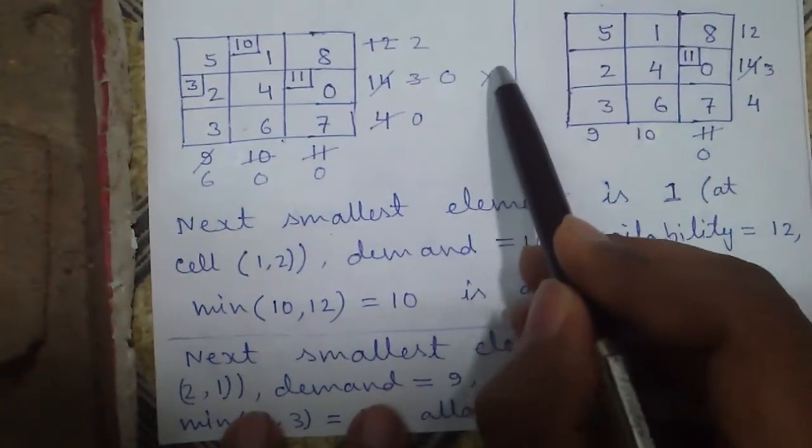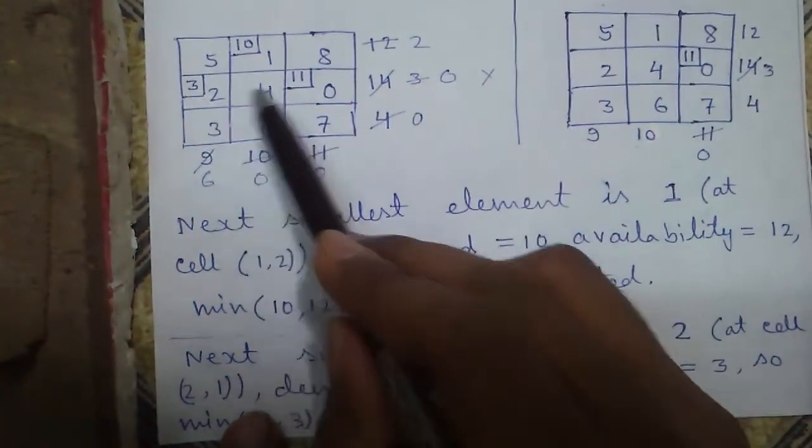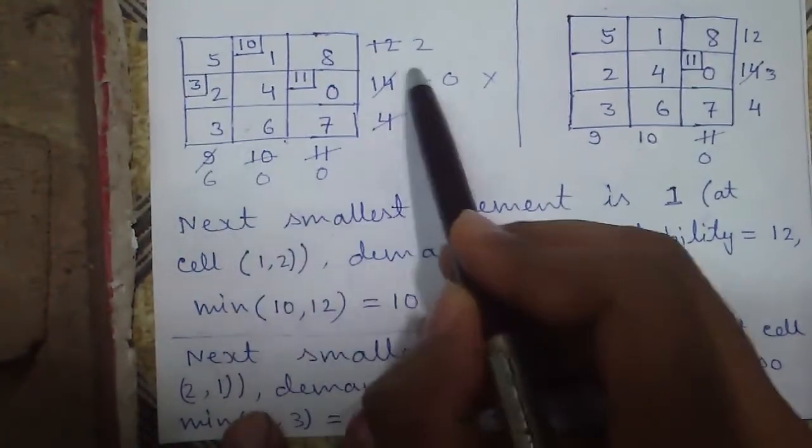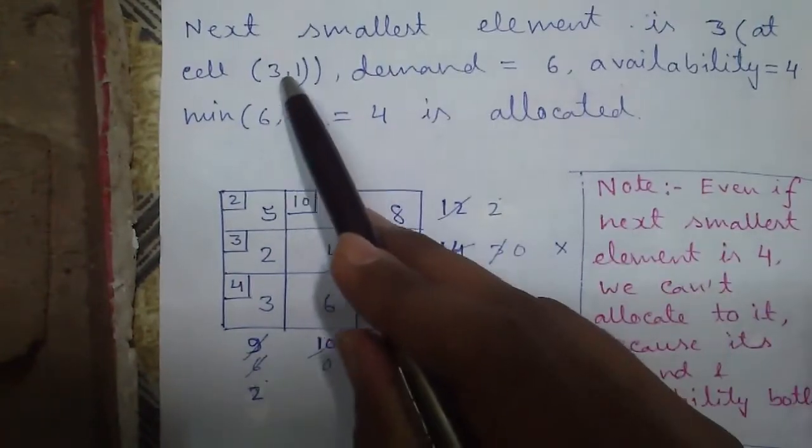So since it is exhausted we will write a small cross, that means we can't allocate from the origin O2. Next smallest element is 3 at cell 3,1.